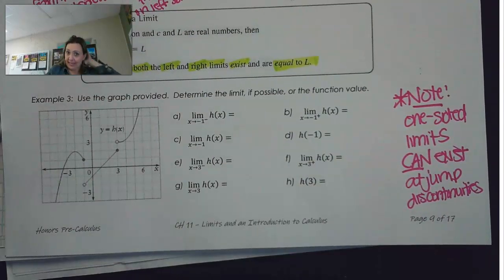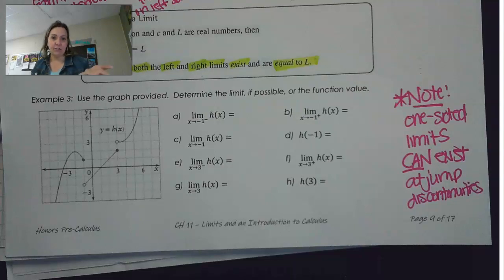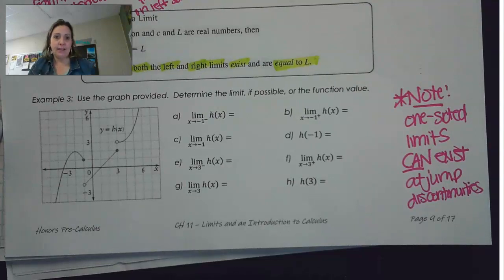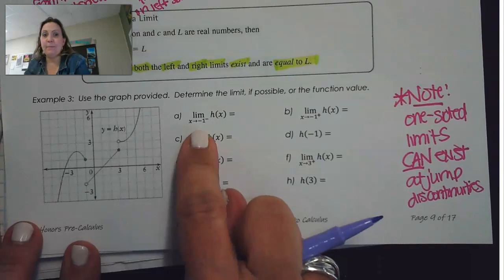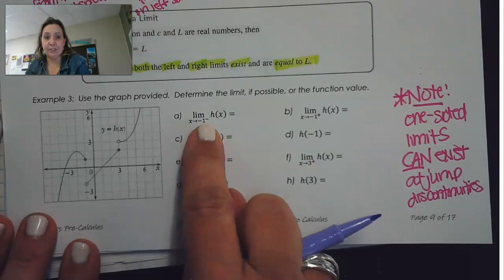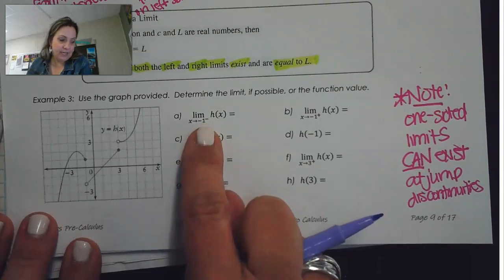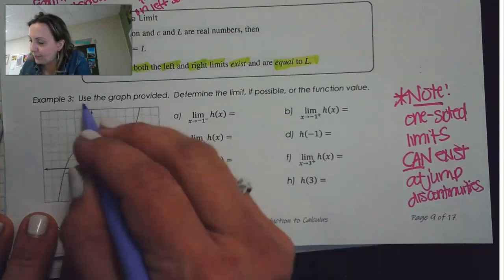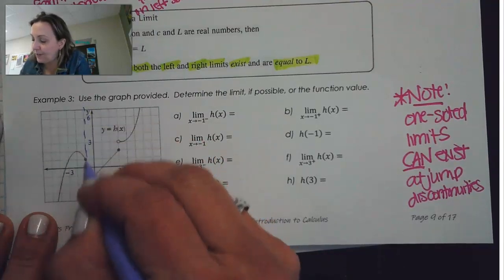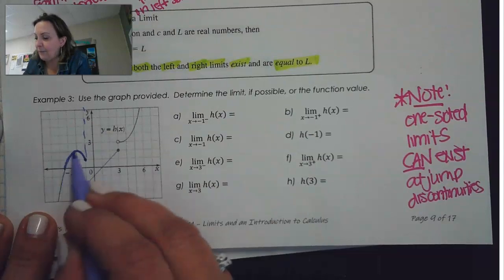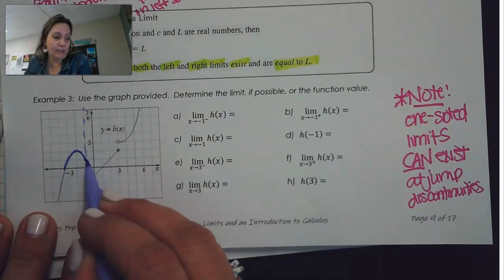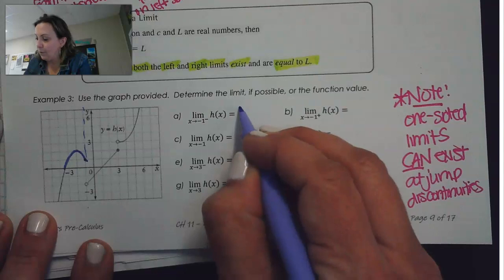Use the graph provided and determine the limit or the function value. In letter A, this one is asking us for the limit as x approaches negative one from the left. Here's where x equals negative one, and I'm approaching it from the left. From the left, it's going towards this value of 1.